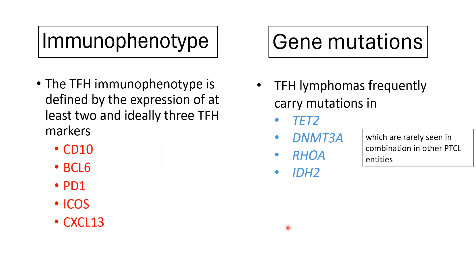The immunophenotype of angio-immunoblastic T cell lymphoma must have a T follicular helper phenotype. By definition, they need to have at least two, and ideally three, T follicular helper markers. A commonly used panel includes CD10, BCL6, PD1, ICOS, and CXCL13.